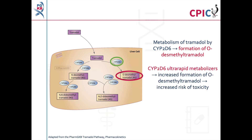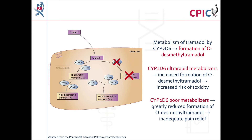In CYP2D6 ultra-rapid metabolizers, the formation of O-desmethyltramadol from tramadol is increased, putting the patient at an increased risk of experiencing toxicity. In CYP2D6 poor metabolizers, the formation of O-desmethyltramadol from tramadol is greatly reduced. As a result, patients who are CYP2D6 poor metabolizers do not get sufficient pain relief from tramadol due to the low levels of O-desmethyltramadol formed.